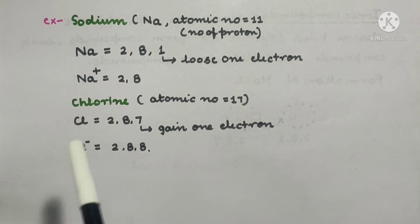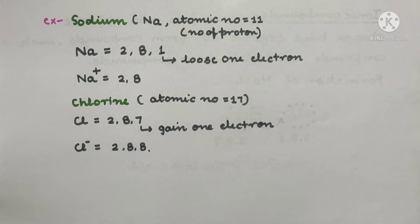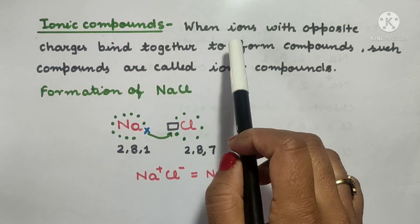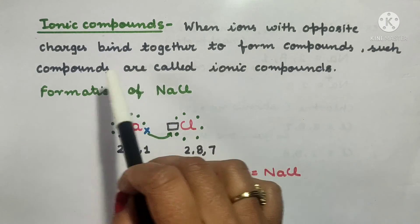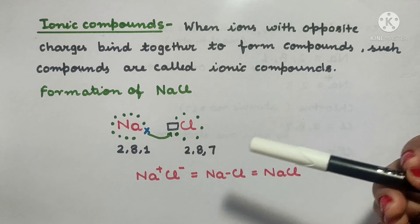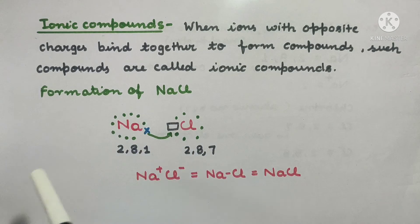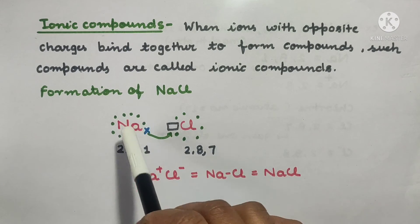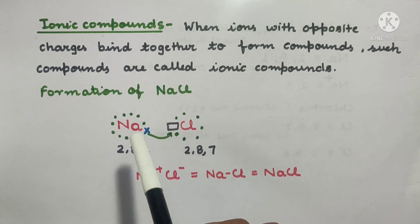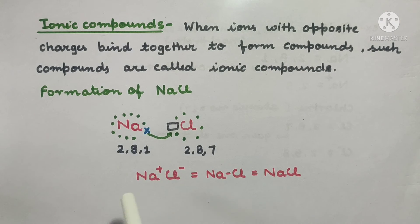So students, we have seen that any metal or non-metal loses or gains electrons to achieve stability, and this is how ions are formed. The next topic is ionic compounds. When ions with opposite charges bind together to form compounds, such compounds are called ionic compounds.